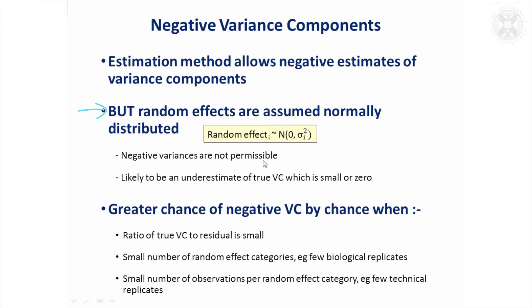Quite often the negative estimates are just an underestimate of the true variance component and you'll have more chance of getting them if the true variance component is actually very small, if you've got a small number of random effect categories, for example a small number of biological replicates or a small number of observations per random effect categories, so that would be maybe a small number of technical replicates.